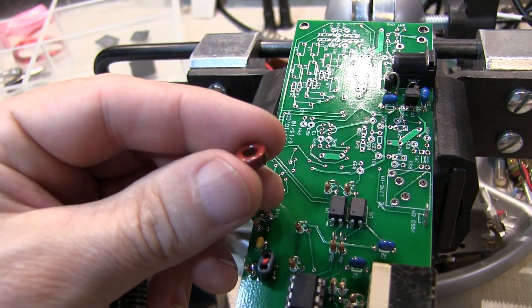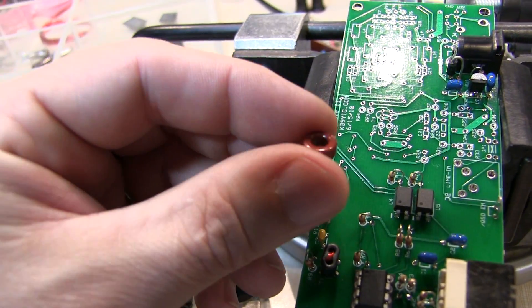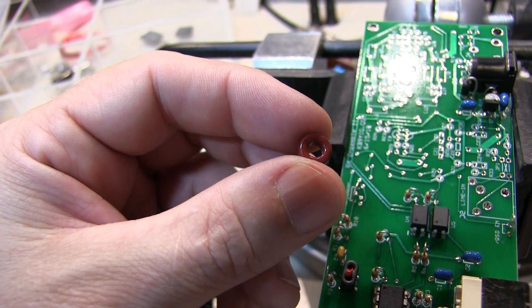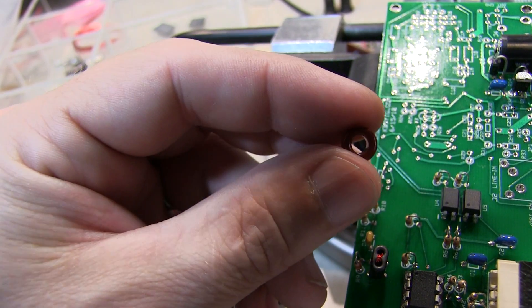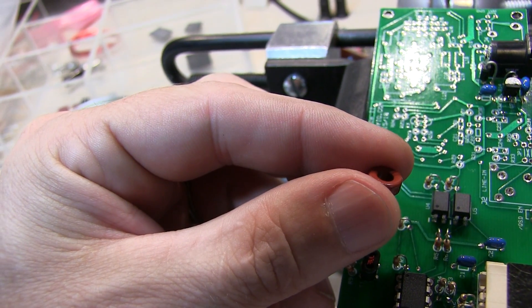The toroids will also be identified by a code, like this is a T30-2. The T meaning toroid, the 30 meaning 3 tenths of an inch in outer diameter, and the dash 2 is the material type.